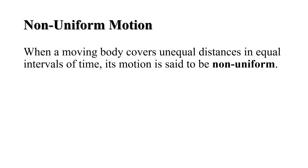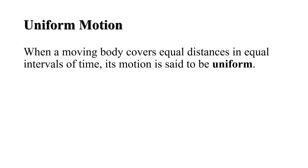Now let us understand non-uniform motion. When a moving body covers unequal distances in equal intervals of time, its motion is said to be non-uniform. When a moving body covers equal distances in equal intervals of time, its motion is said to be uniform. In everyday life, we seldom find objects moving with a constant speed over a long period of time, so most moving objects around us are in non-uniform motion.